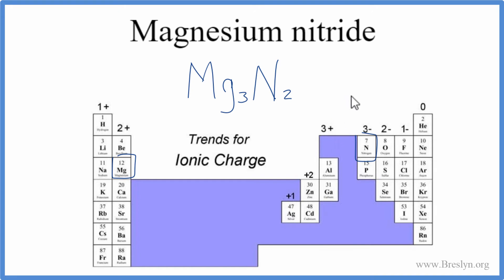And that's the formula for magnesium nitride, Mg3N2. But let's check our work. Let's make sure that we have the right answer.